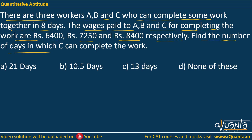Find the number of days in which C can complete the work alone. We have learned in time and work that the fraction of total work done by someone is equal to the fraction of total wage earned by him. So the fraction of wage earned by C is 8400 divided by the total wage, which is 6400 plus 7250 plus 8400, giving a sum of 22050.